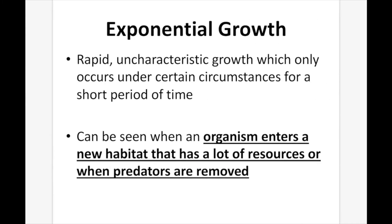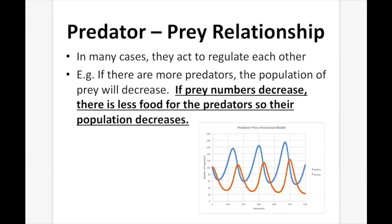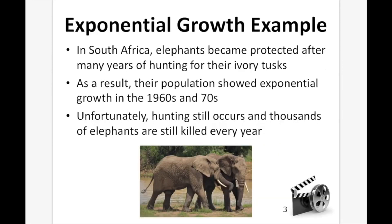Exponential growth is rapid, uncharacteristic growth that only occurs under certain circumstances for a short period of time. It can occur when an organism enters a new habitat with many resources, or when predators are removed. Thinking back to our wolf-rabbit graph — if we suddenly removed the wolves, our rabbit population would skyrocket, showing exponential growth as there'd be nothing to eat them. This happened in South Africa when elephants became protected after years of being hunted for their tusks, causing their population to show exponential growth in the 1960s and 70s. Unfortunately, hunting still kills thousands of elephants every year.